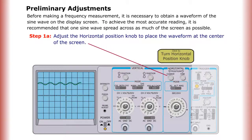Before making a frequency measurement, it is necessary to obtain a waveform of the sine wave on the display screen. To achieve the most accurate reading, it is recommended that one sine wave is spread across as much of the screen as possible.